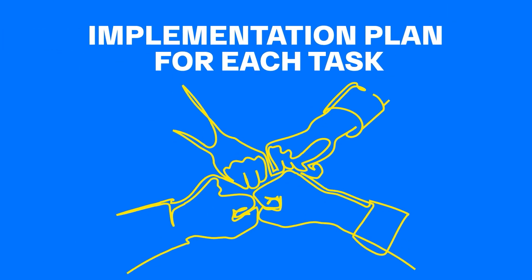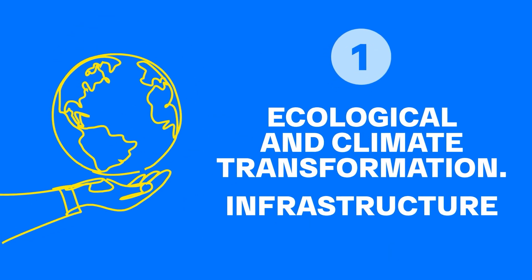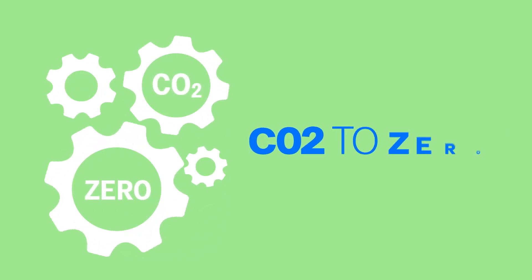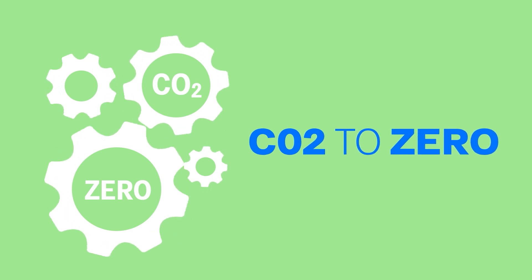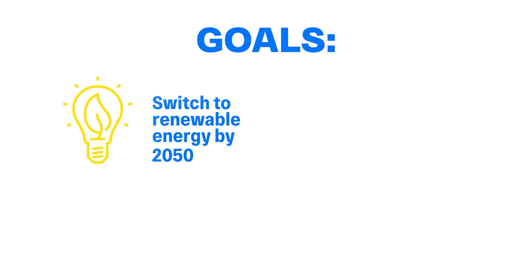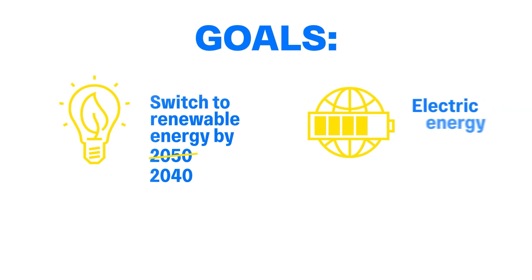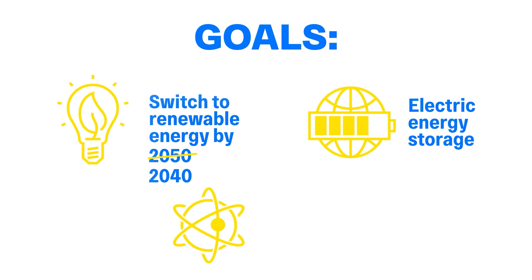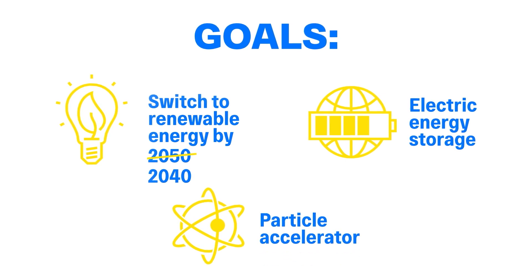Implementation Plan for Each Task. Ecological and Climate Transformation and Infrastructure: Production and Implementation of Energy Storage Systems that reduce CO2 emissions to zero. Goals: Ensure access to electrical energy for all people; radically accelerate the transition of mankind to renewable energy by 2040 instead of 2050.